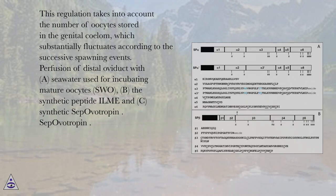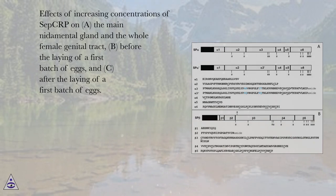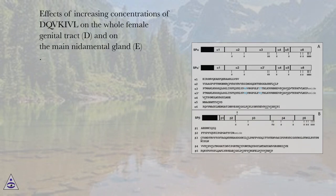Perfusion of distal oviduct with: (a) seawater used for incubating mature oocytes (SWO), (b) the synthetic peptide ILM, and (c) synthetic sep-ovotropin. Effects of increasing concentrations of sep-CRP on (a) the main midimental gland and the whole female genital tract, (b) before the laying of a first batch of eggs, and (c) after the laying of a first batch of eggs. Effects of increasing concentrations on the distal oviduct on the whole female genital tract (d) and on the main midimental gland (e).